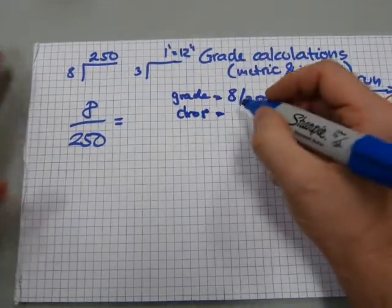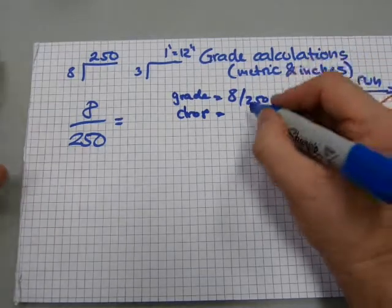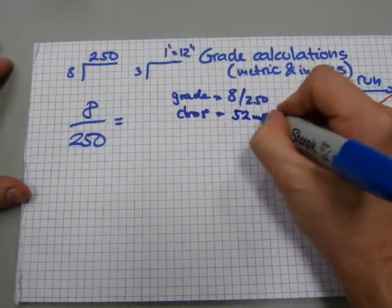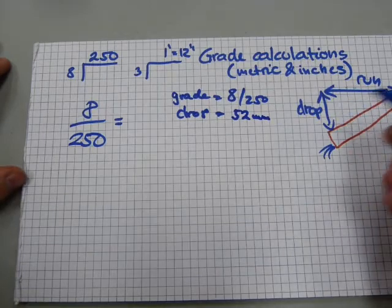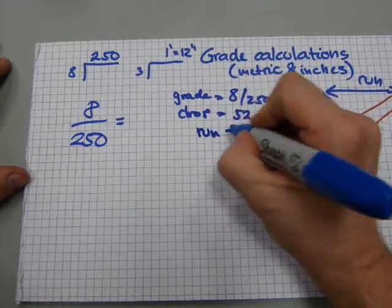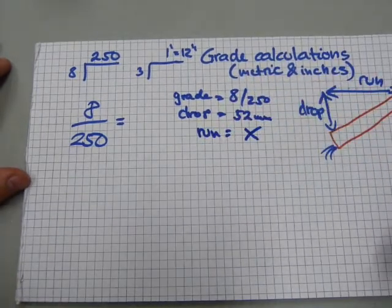We have a drop of, say, 52 millimeters, and we want to know the run. The run is to be calculated, that's gonna be x in this one.